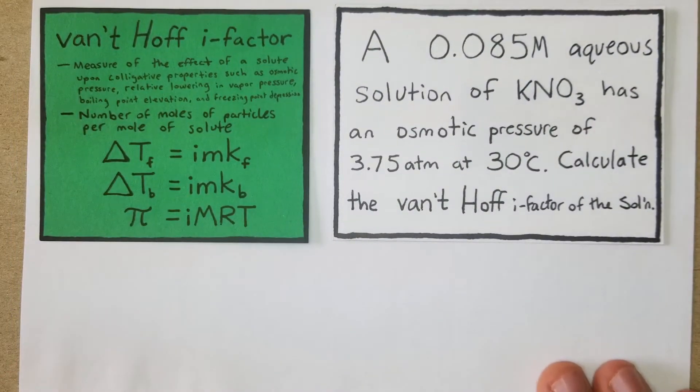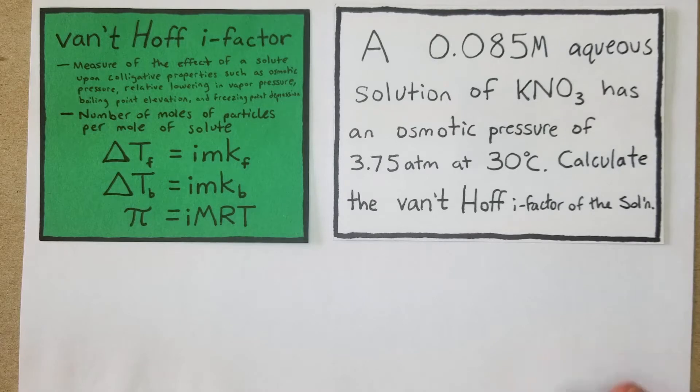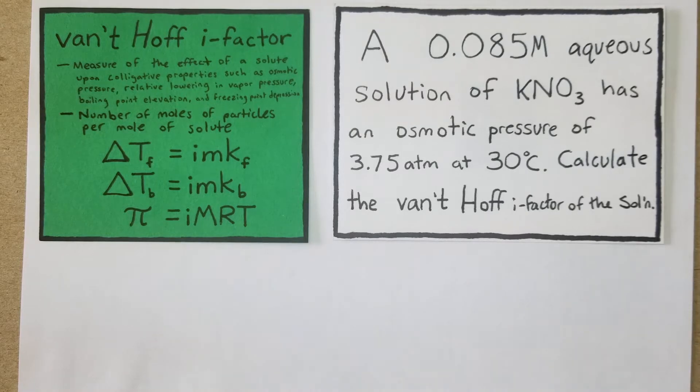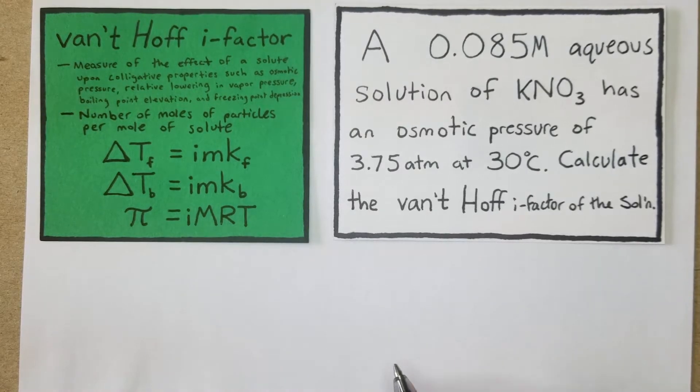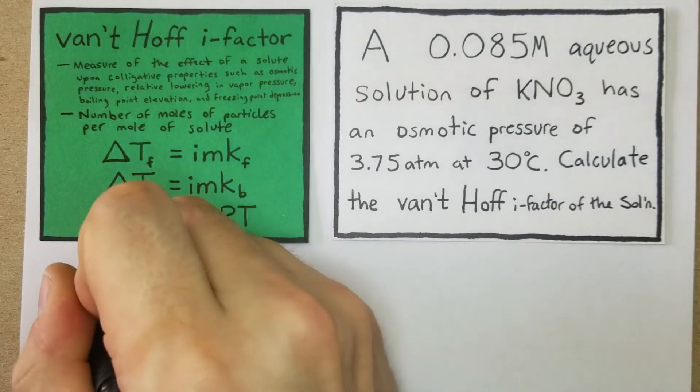Here's our first question: A 0.085 molar aqueous solution of KNO3 has an osmotic pressure of 3.75 atm at 30 degrees Celsius. Calculate the van't Hoff i-factor for the solution. This is going to be kind of a long problem, but I'll try to map it out as I go.